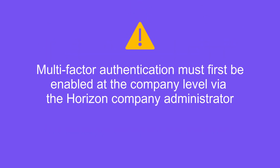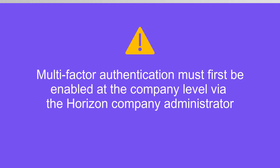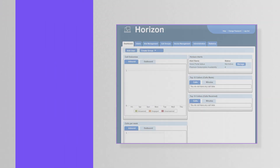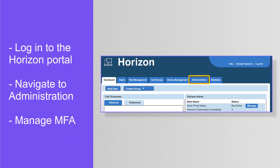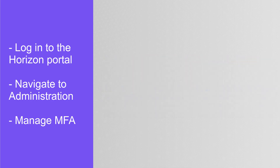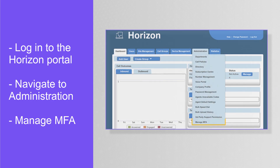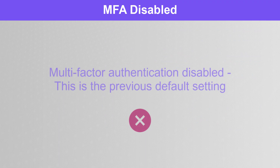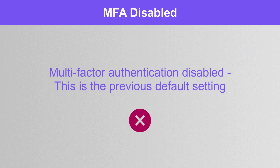Multi-factor authentication must first be enabled at the company level by the Horizon company's administrator. Once logged into the Horizon portal, navigate to Administration and then Manage MFA. The options for MFA are as follows.